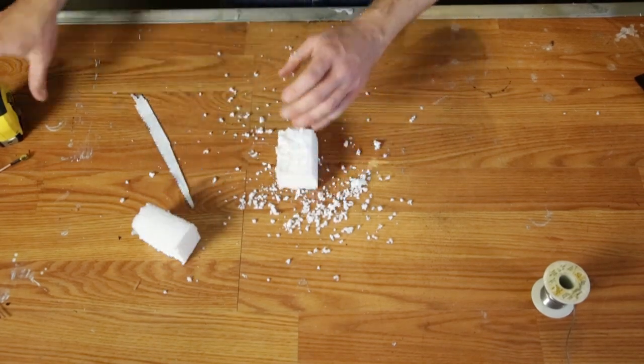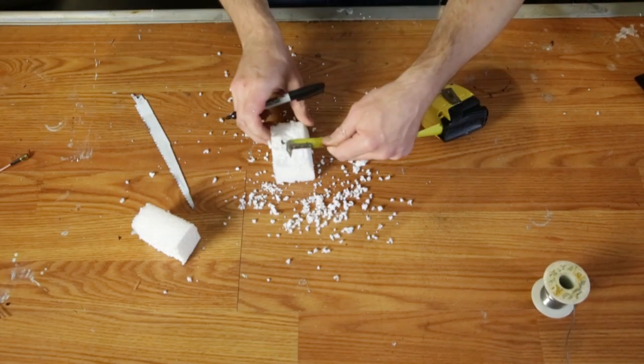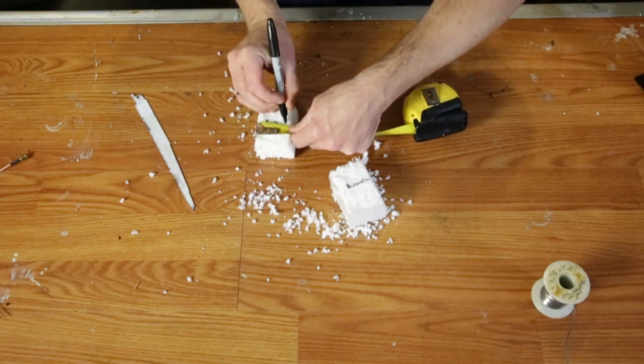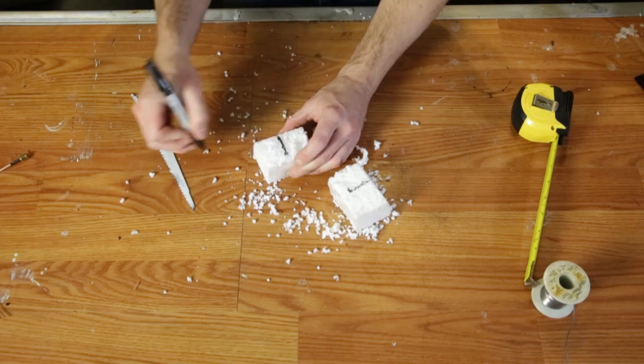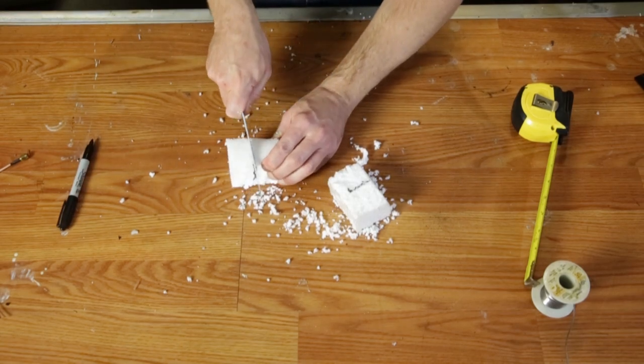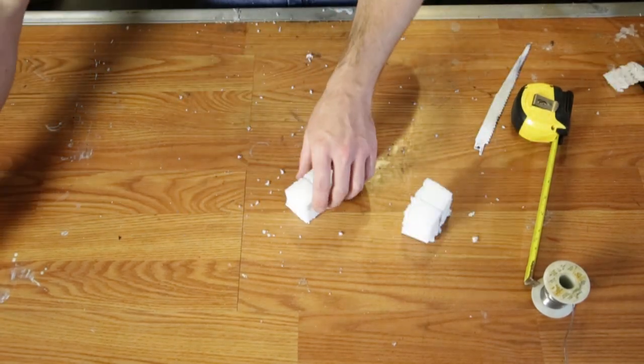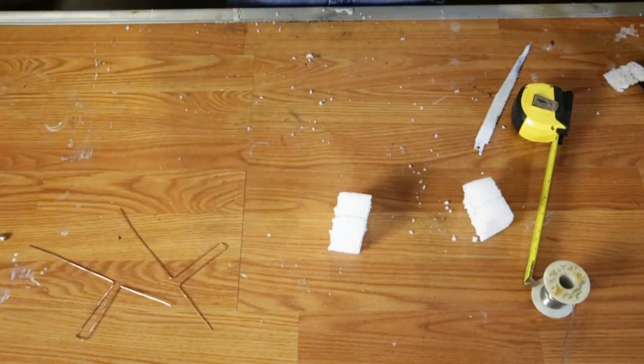Once I've got a couple blocks cut to a decent size, I'm going to mark each block half an inch from the bottom and then a line all the way up to the top. This is the line I'll use to cut down with my saw, stopping at the bottom line so there's a half inch of foam before I cut all the way through.